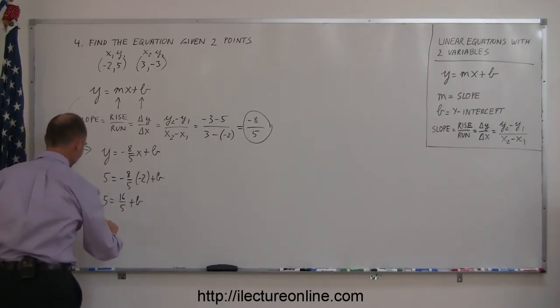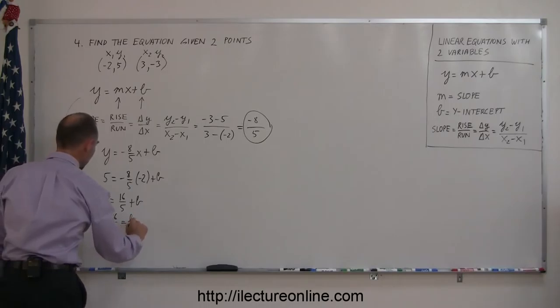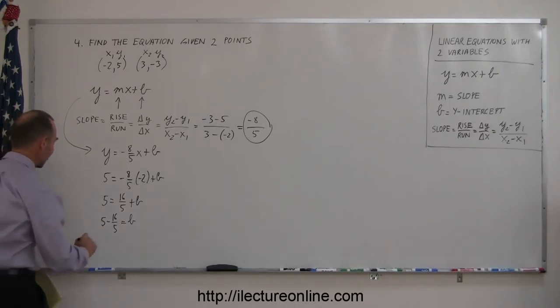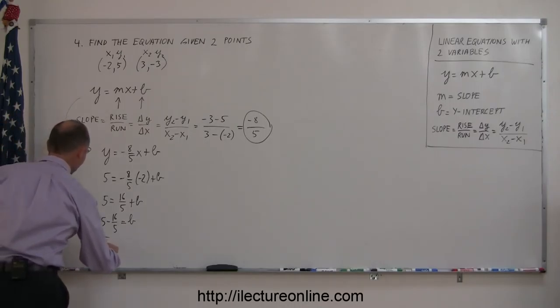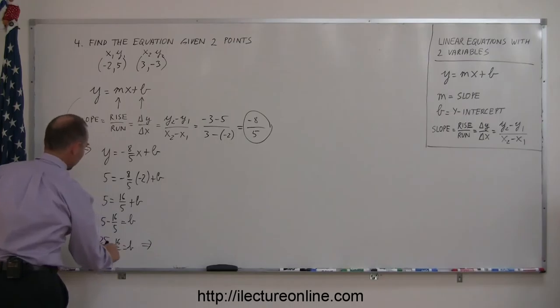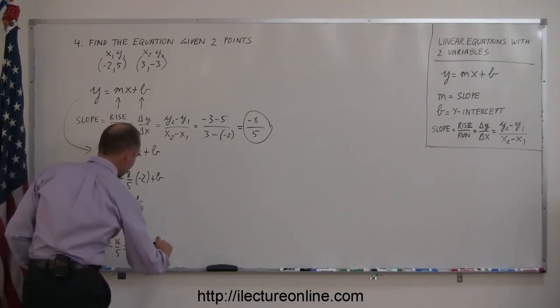Now go ahead and move the 16 over 5 across to the other side. We have 5 minus 16 over 5 equals b. To be able to subtract these, I have to write this over a common denominator of 5, so this becomes 25 over 5 minus 16 over 5 equals b, or 25 subtract 16 is 9. b equals 9 over 5.